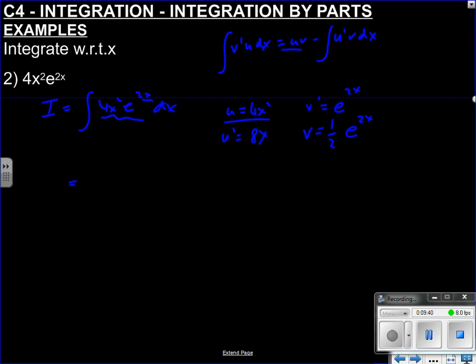So now we can fill in our ingredients, u v, u v. So 4x squared times half e to the 2x, always minus, minus the integral u dash v. So 8x times a half e to the 2x dx. Just clean that up. So that's 2x squared e to the 2x subtract. 8 times a half is 4x e to the 2x dx. So I'm back with another product here.